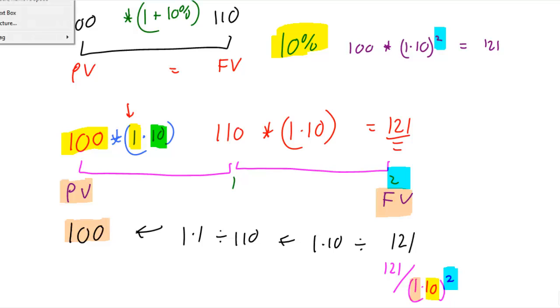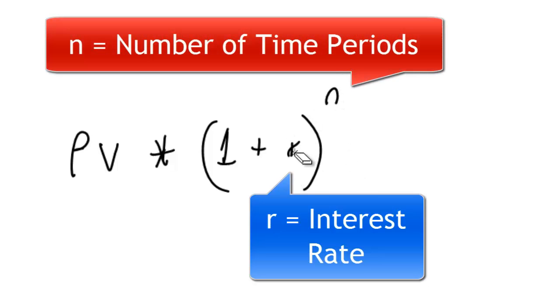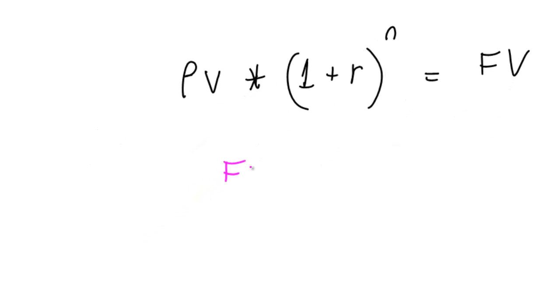Let's write down a couple of equations for you. If you take the present value and you multiply it by 1 plus the interest rate and you raise that to the number of years, that will give you the future value. And if you have the future value and you want to get to the present value, then you're going to divide by 1 plus the interest rate raised to the number of years. That's called discounting.